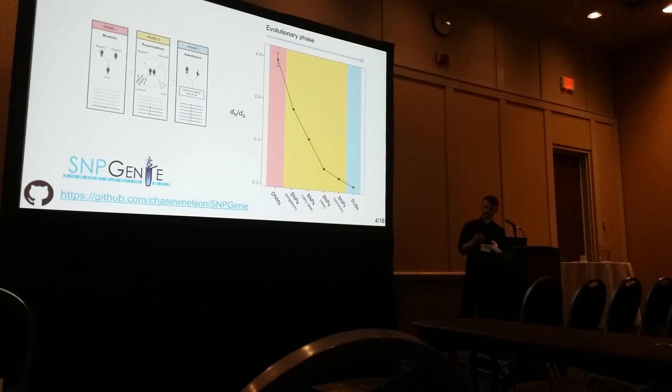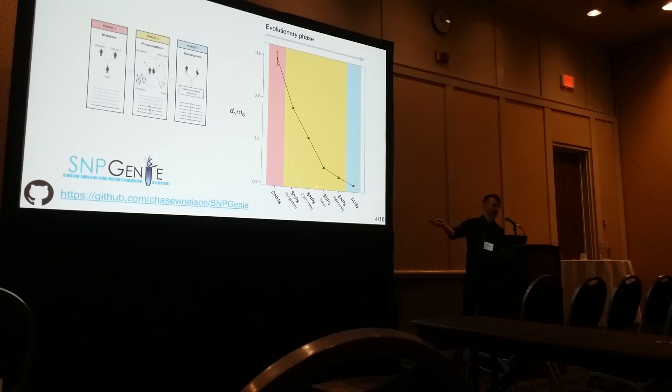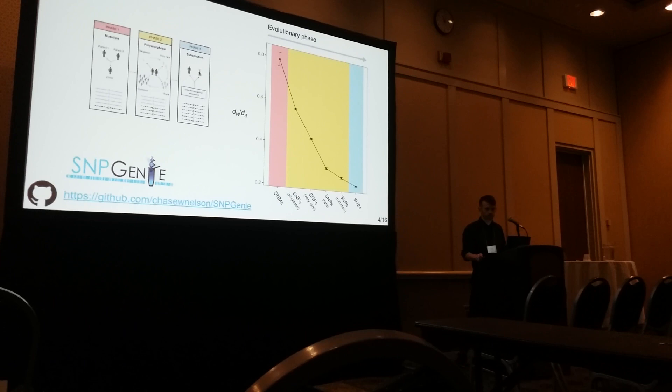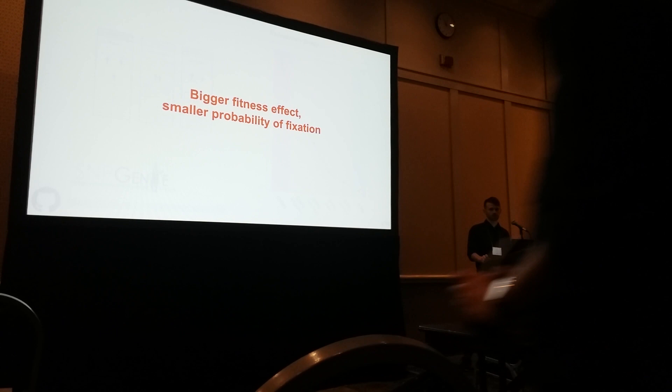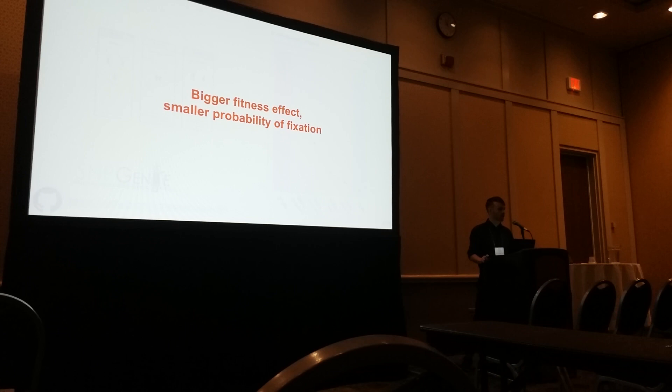On the x-axis, as you go left to right, these are older and older — so new mutations, increasingly old and increasingly successful SNPs, all the way to fixations. That's kind of what you'd expect under the neutral theory: the things that make it tend to be the things with smaller fitness effects. Put another way, the class of sites — synonymous and non-synonymous — that have a larger fitness effect have a smaller probability of fixation.